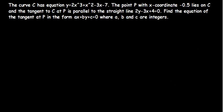Now let's look at a more advanced question — pay particular attention. We have a curve C with equation 2x cubed plus x squared minus 3x minus 7. The point P has the x-coordinate negative 0.5.